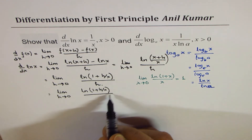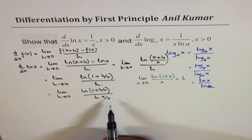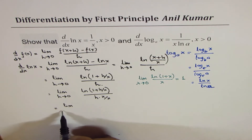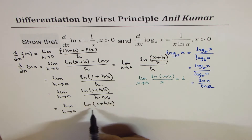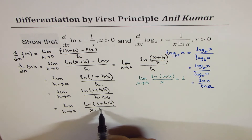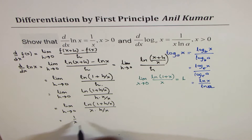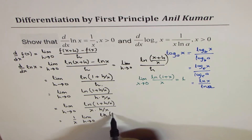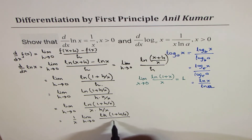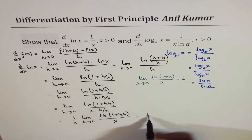What I'm doing here is multiplying h by x over x. By doing so, we get the limit as h approaches 0 of ln(1 + h/x) over h/x, and we can write this as x times h/x. Since x is independent of h, we can bring 1 over x outside the limit, giving us 1 over x times the limit as h approaches 0 of ln(1 + h/x) over (h/x). Using the limit formula, this part equals 1, so we get 1 over x.